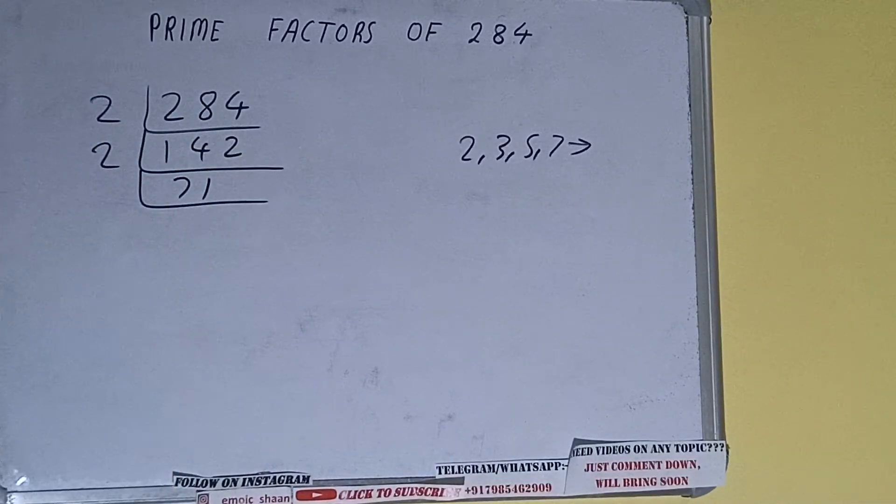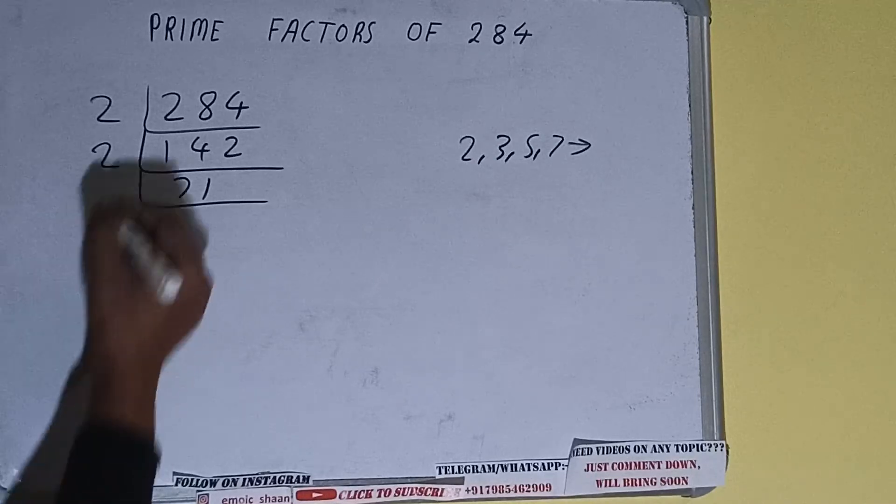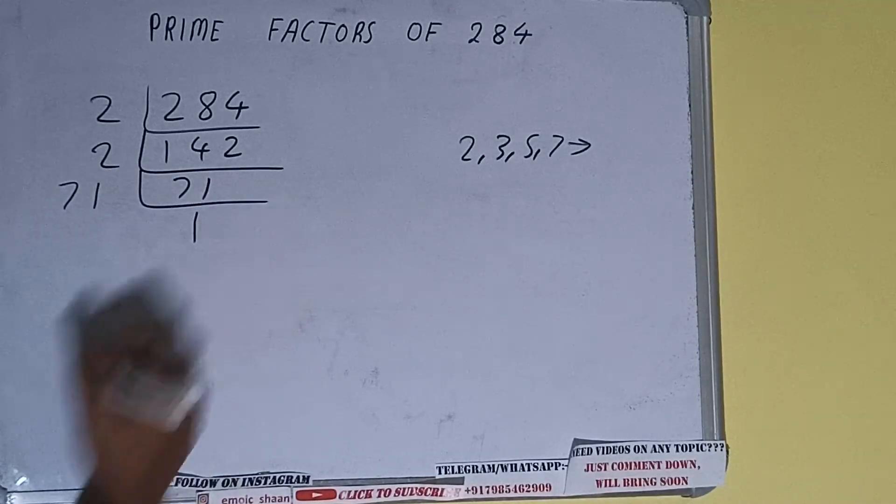71 is not divisible by 2 because the number is odd, and on that, the number 71 is also a prime number. So it is only divisible by itself, that is 71. And once we do so, we'll be getting 1.